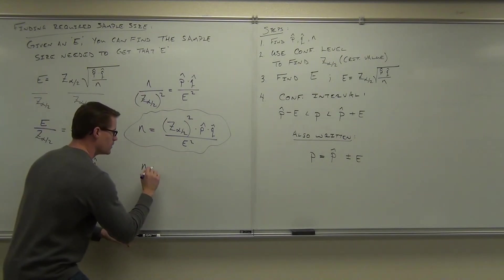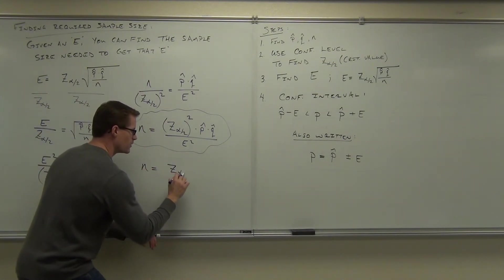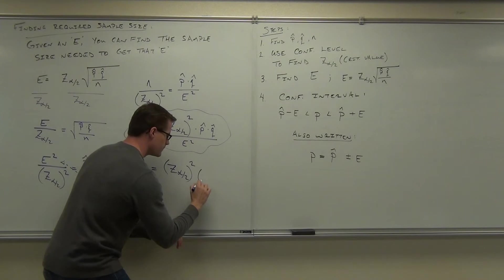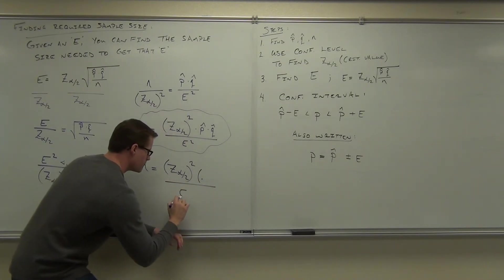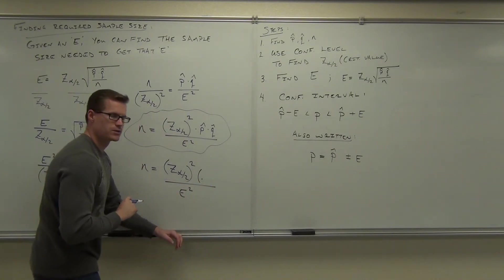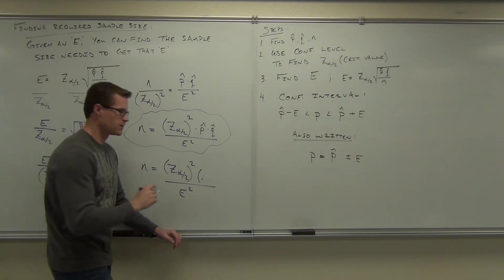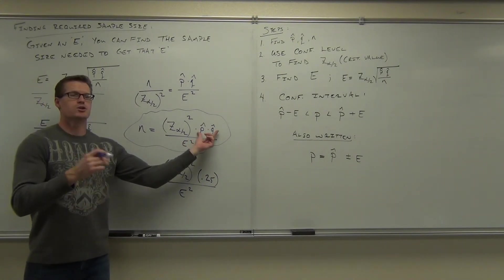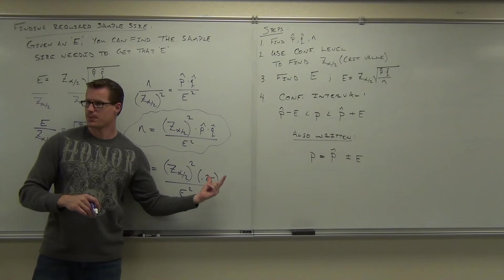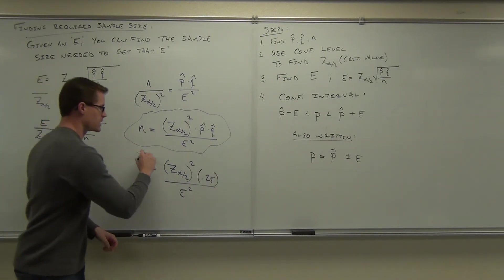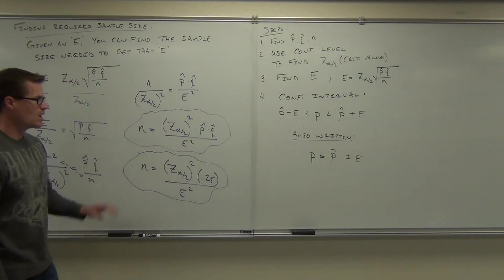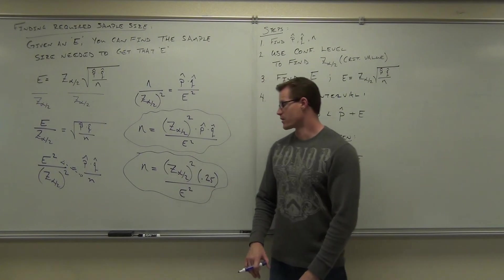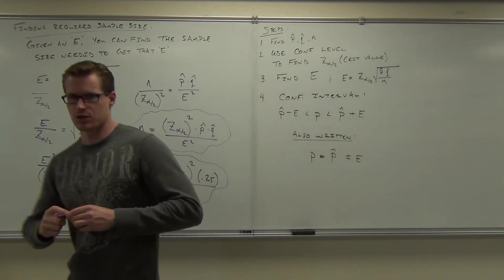The worst case scenario is: I don't know. We're going to assume it's 50-50. 50-50 would be a worst case scenario for success and failure. What's 0.5 times 0.5? 0.25. That's the worst case scenario where you're assuming P hat and Q hat are both 0.5. This is how you can use E to find the required sample size to get your margin of error.